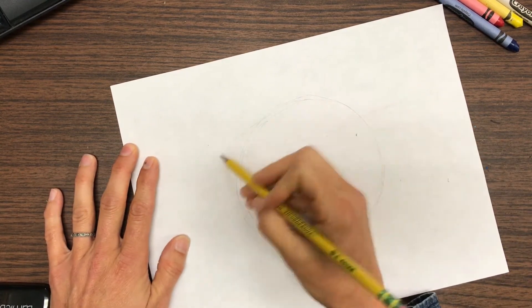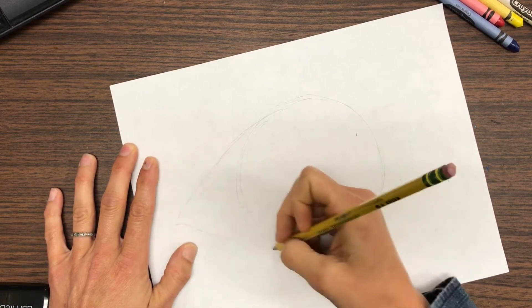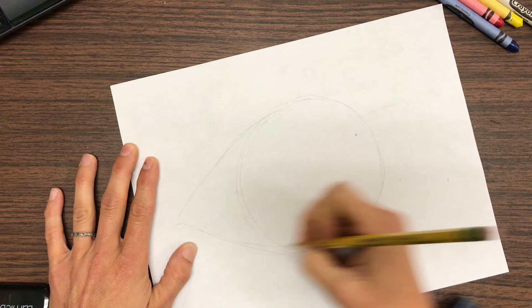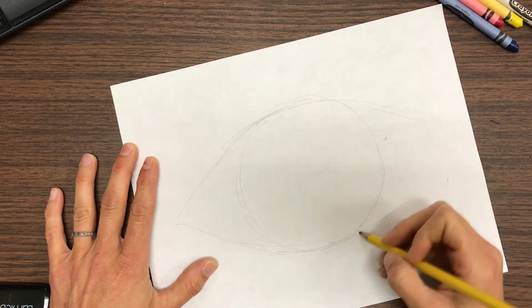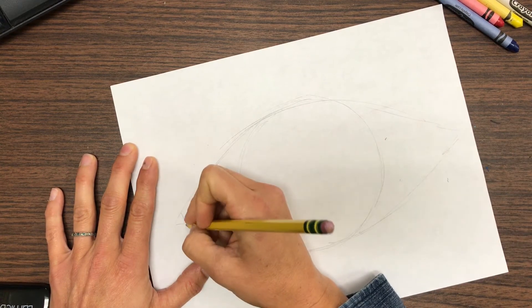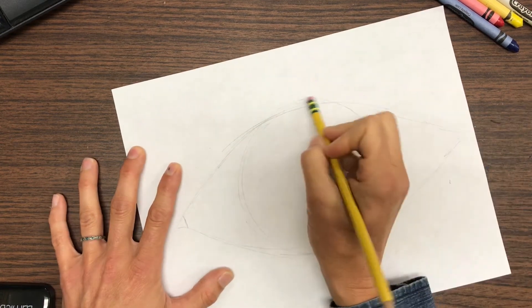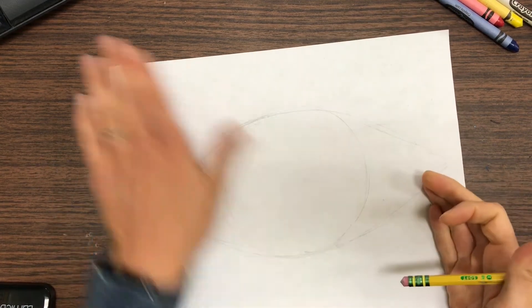I like to add the little tear duct over here. I'll save the eyelashes for later. Now I'm going to find the center of the eye.